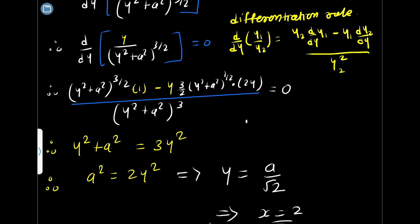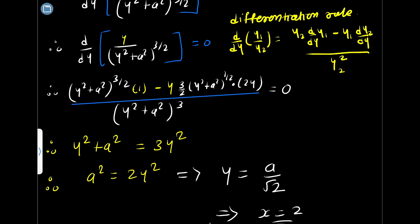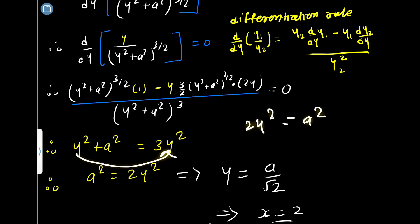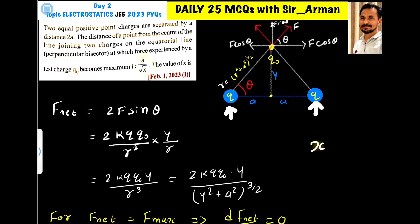Simplifying: y squared plus a squared equals 3y squared. Rearranging gives 2y squared equals a squared, so y squared equals a squared divided by 2, and therefore y equals a divided by root 2. Comparing with the form a divided by root x from the question, x equals 2.